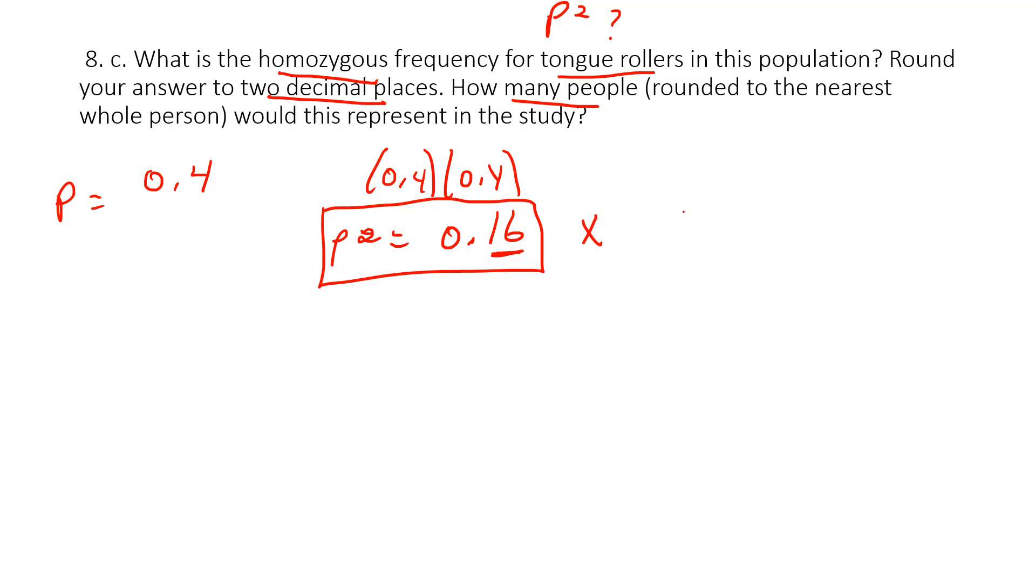So we just take the decimal that we calculated with the frequency, multiply by the total in the study which is 1300, and we come up to 208 people that are going to be homozygous dominant.